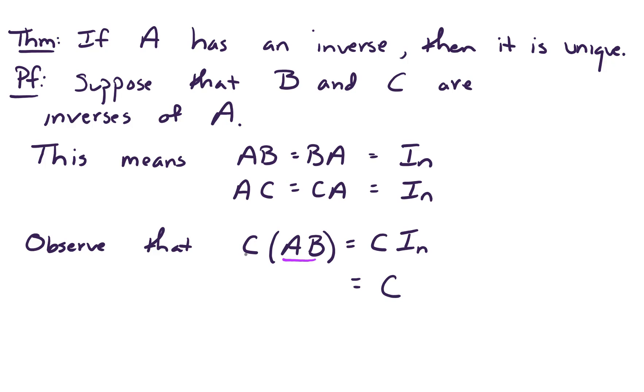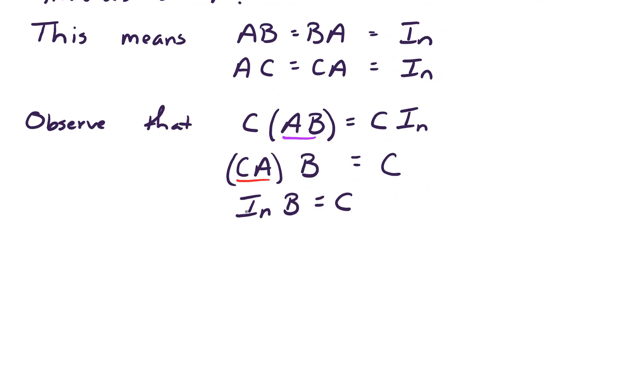On the left hand side, matrix multiplication is associative. So we could have written this as CA times B. But CA is just the n by n identity matrix. And so on the left hand side, we have the identity matrix times B, which is just B. And so we conclude that B equals C.